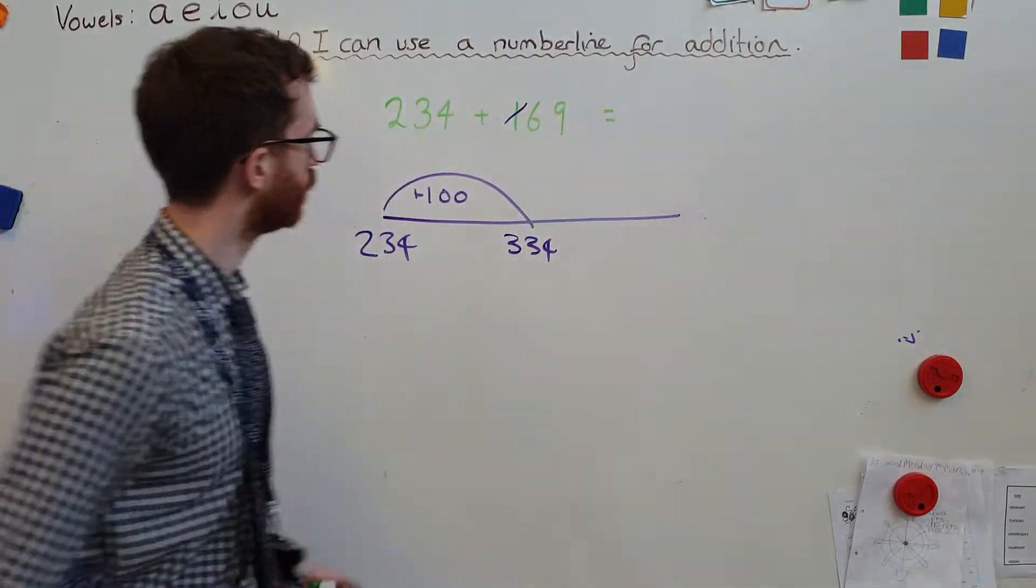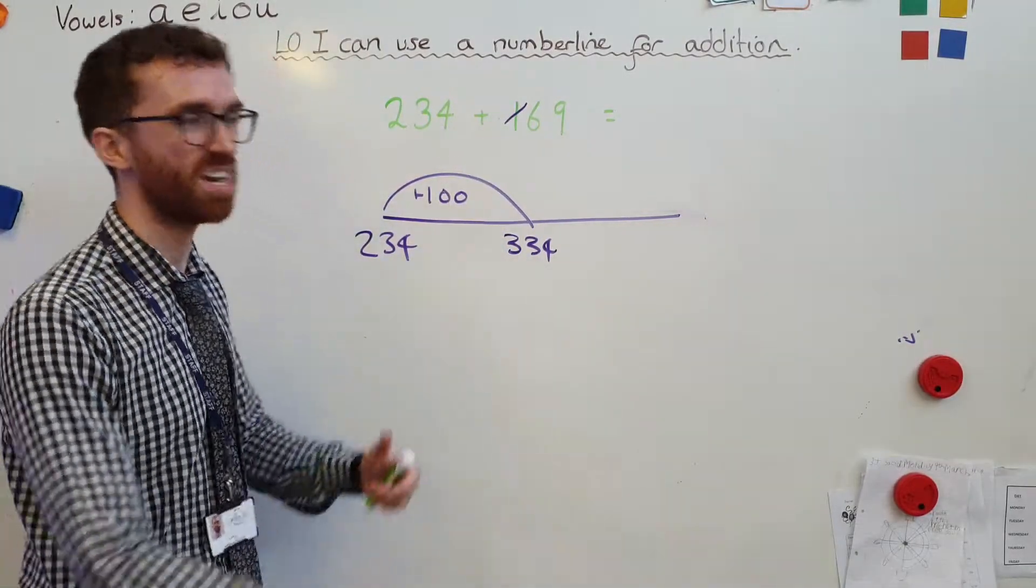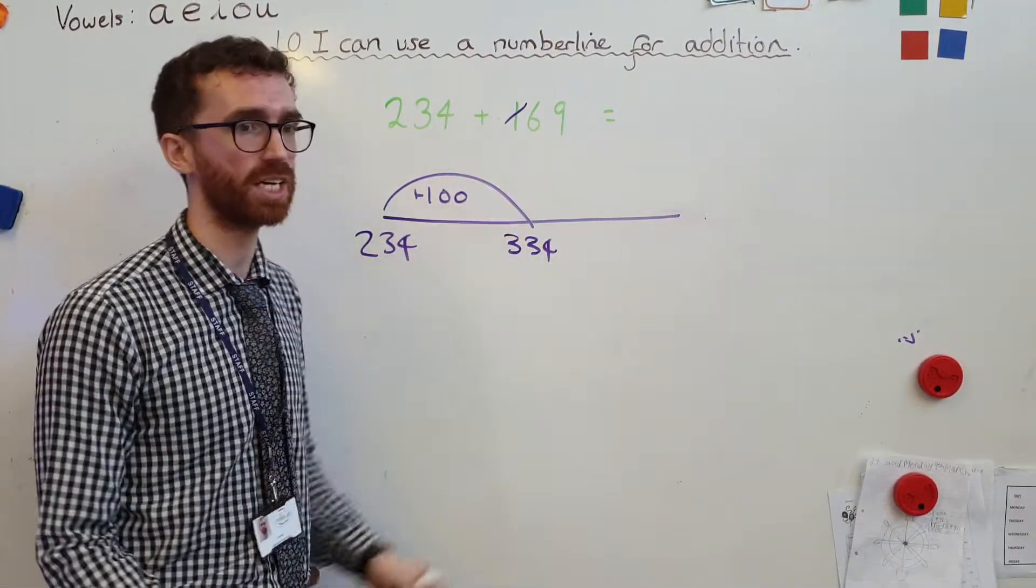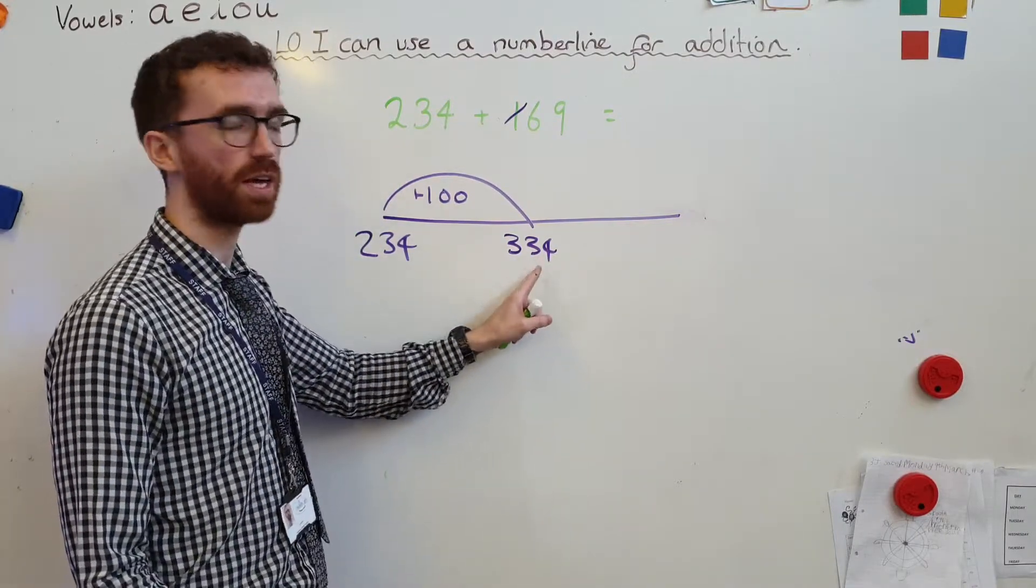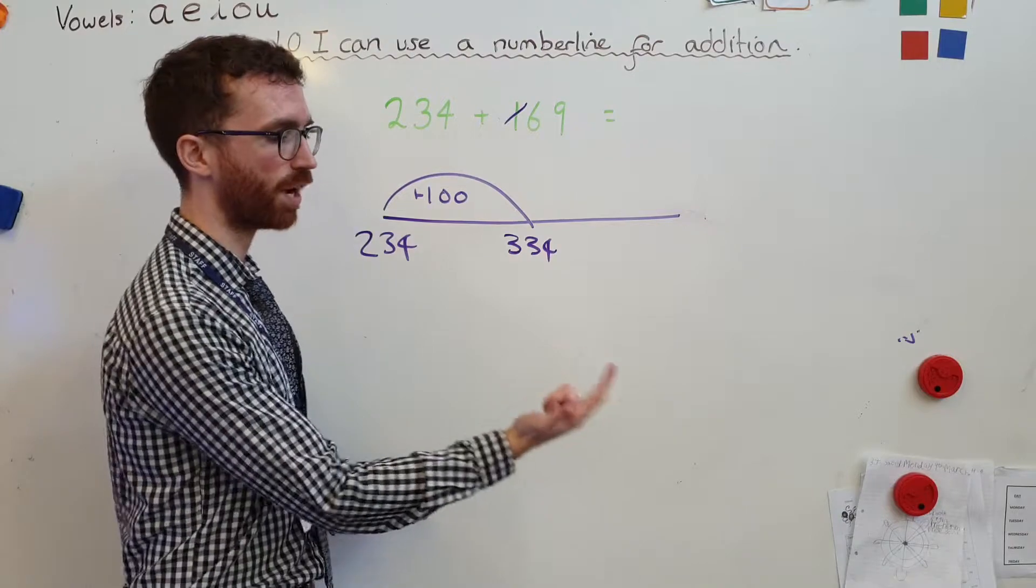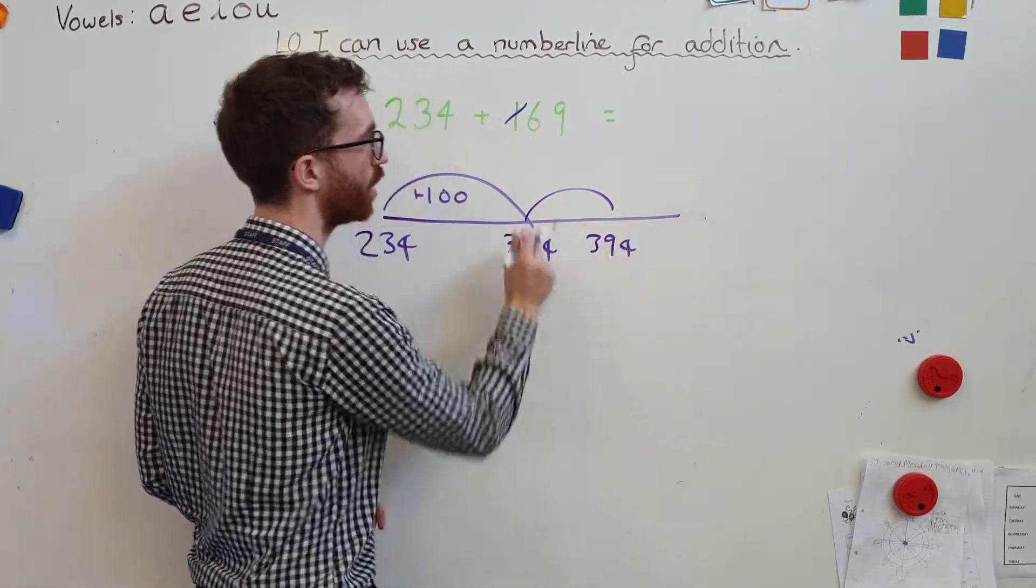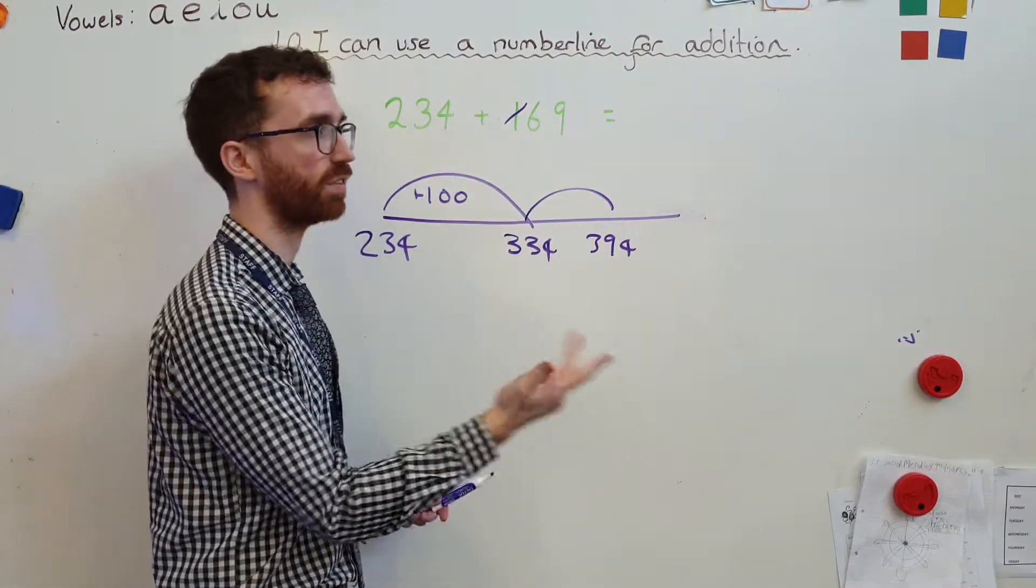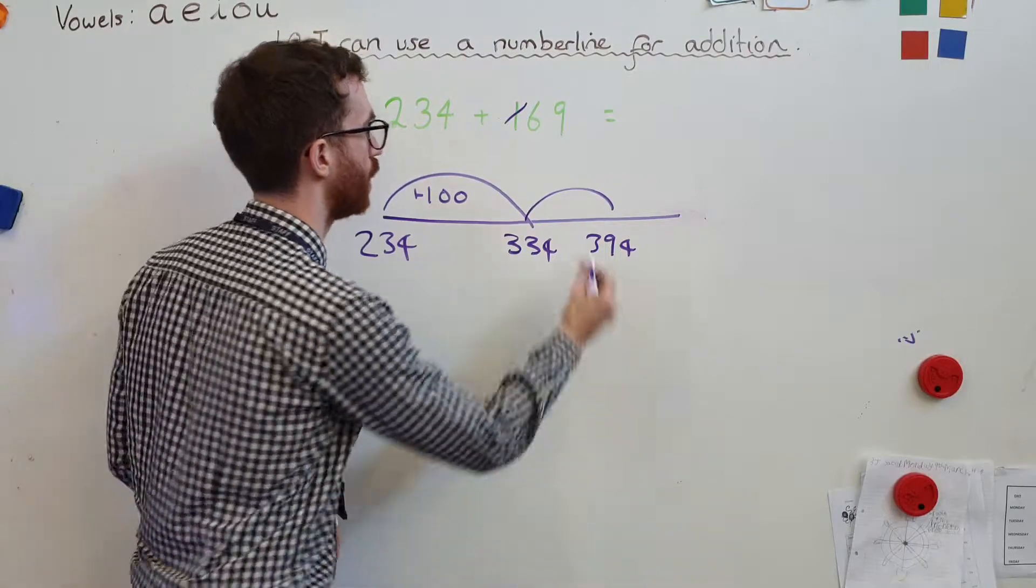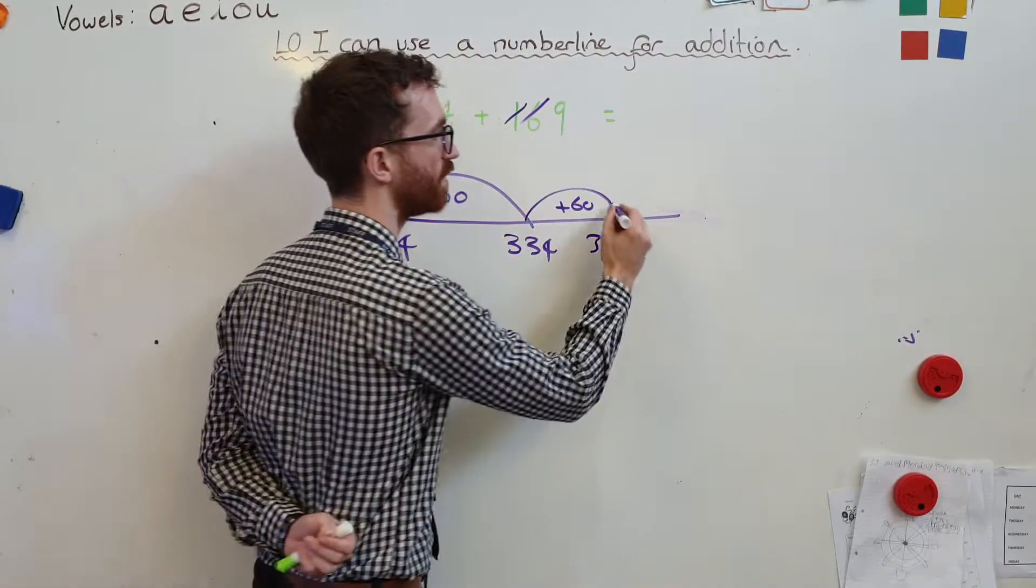So get rid of that, nice clear working space. I've added my 100. That's gone. What I've got to do next is add the 60. Same thing as the 100s. I'm not adding any 100s, I'm not adding any 1s. I'm only adding 6 to the 3, to the 10s column. So 3, 4, 5, 6, 7, 8, 9. Oh yeah, that will become 394, okay? 30 add 60 is 90. 30, 40, 50, 60, 70, 80, 90. Okay, make sure I show that I've added that. That's gone. Next thing I'm going to do is add the 9.